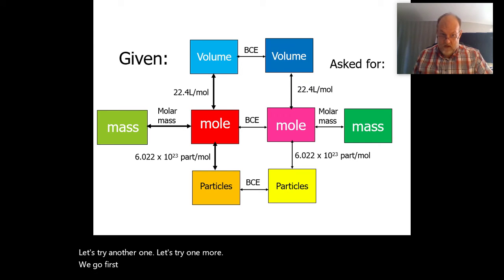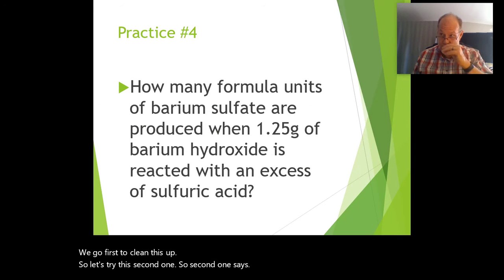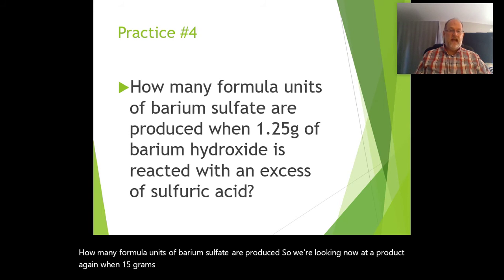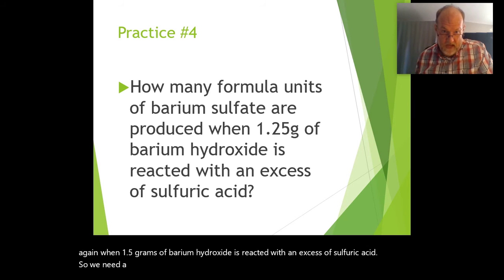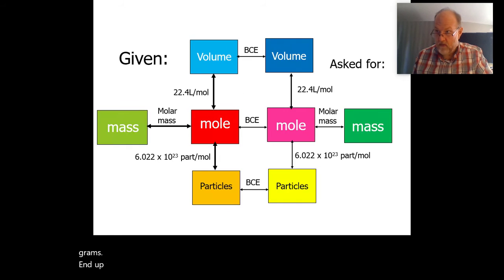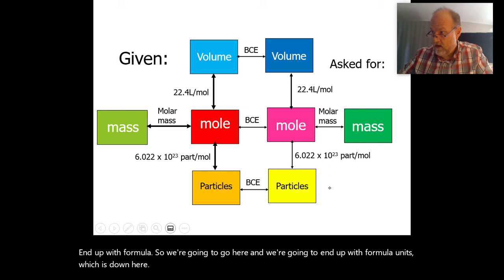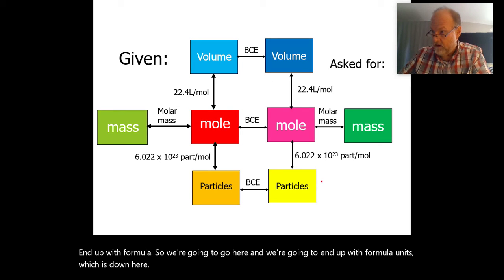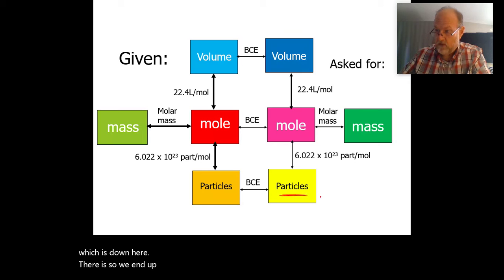So the second one says: how many formula units of barium sulfate are produced when 1.25 grams of barium hydroxide is reacted with an excess of sulfuric acid? So we need a plan. We're going to end up at formula units and we're going to start with grams. We're going to end up with formula units, which is particles.